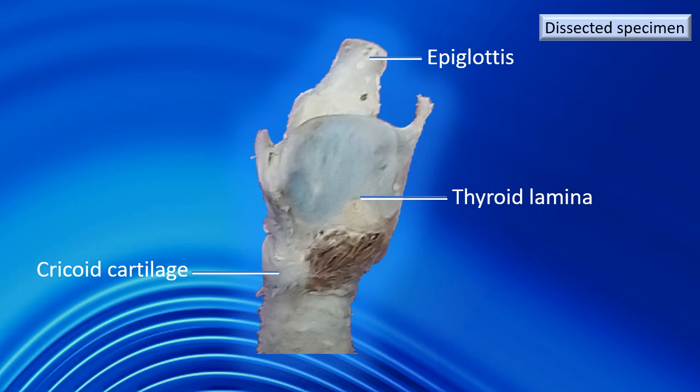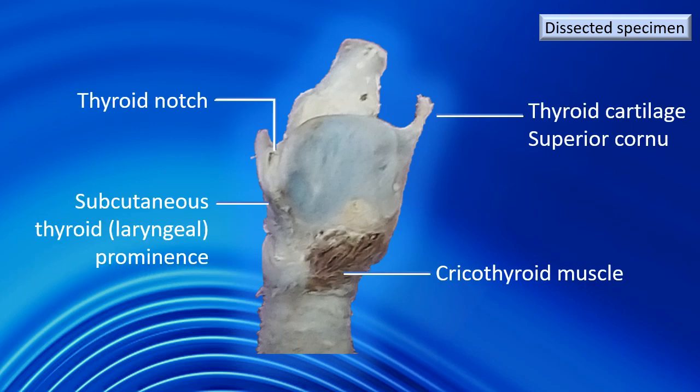Now we are going to the real specimens — the dissected specimens. Note the gentle blue appearance of the thyroid lamina and the cricoid, clearly indicating hyaline cartilage. The thyroid lamina is seen, the epiglottis is seen above it, and below is the cricoid cartilage — a ring-shaped structure. The cricothyroid muscle — a brown structure — is also identified. The superior cornu, the upper projection of the thyroid lamina, is shown. The thyroid notch and the subcutaneous laryngeal prominence are also noted in this slide.